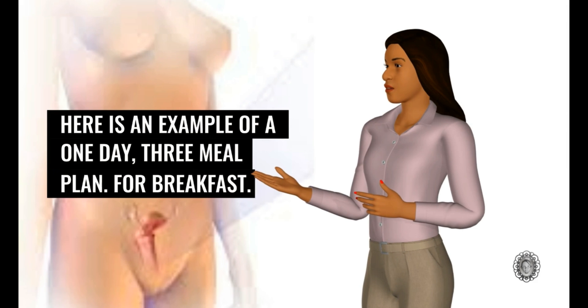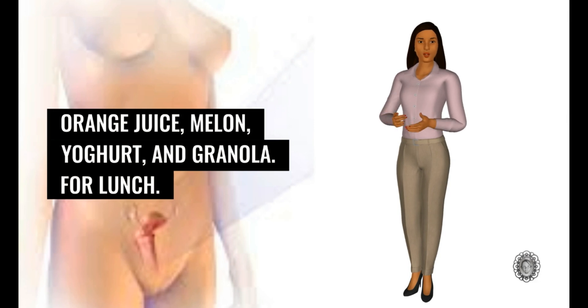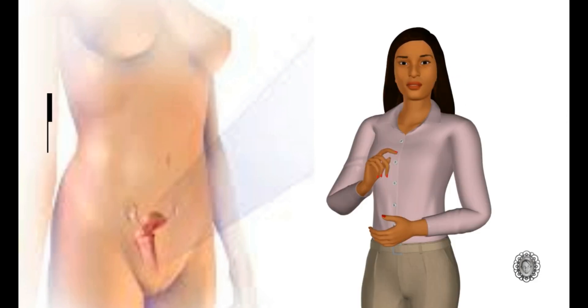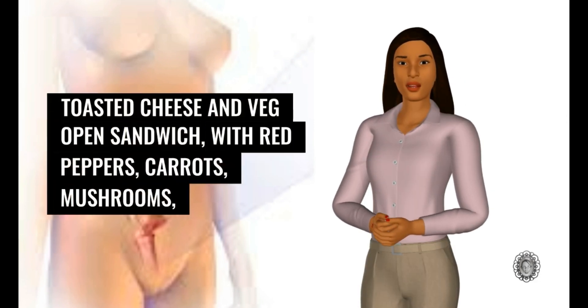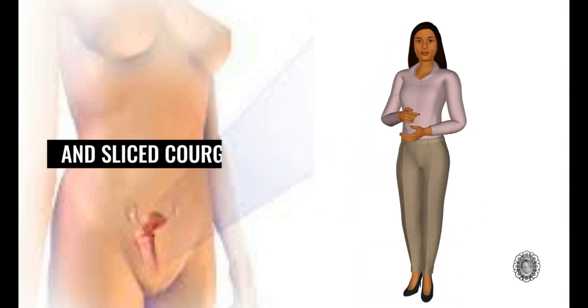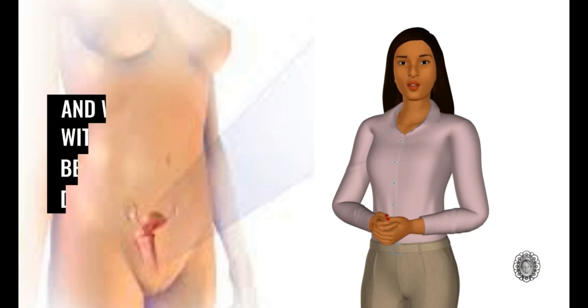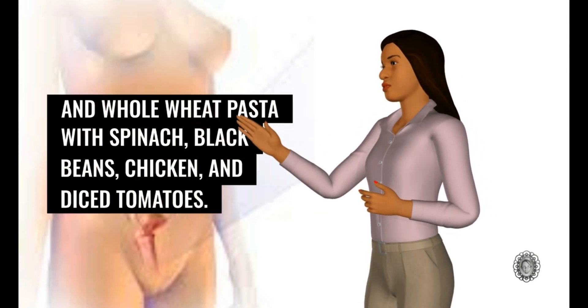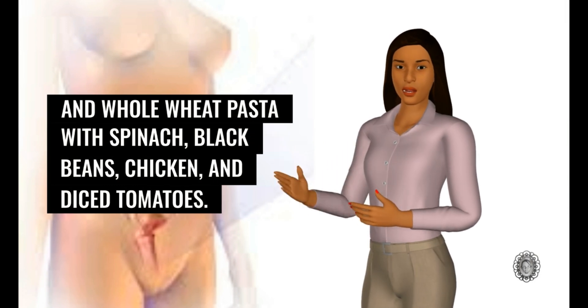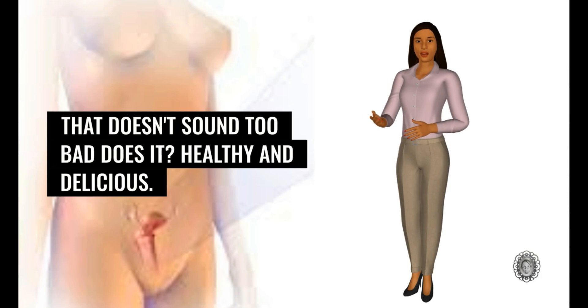Here is an example of a one-day, three-meal plan. For breakfast: orange juice, melon, yogurt, and granola. For lunch: toasted cheese and veg open sandwich, with red peppers, carrots, mushrooms, and sliced courgette. For dinner: tossed salad with grapefruit segments and whole wheat pasta with spinach, black beans, chicken, and diced tomatoes. That doesn't sound too bad, does it? Healthy and delicious.